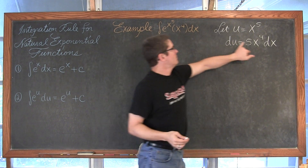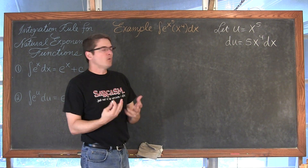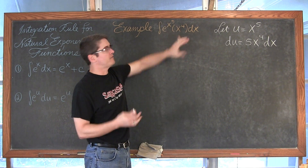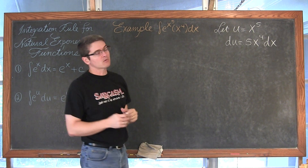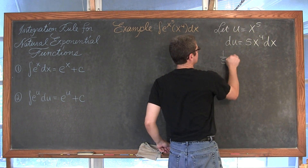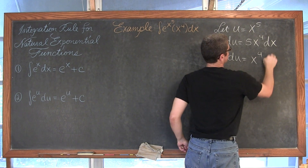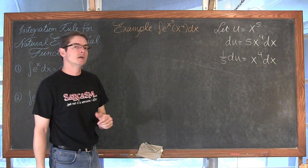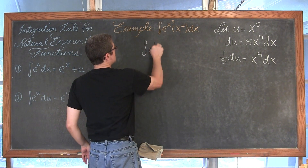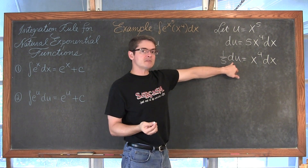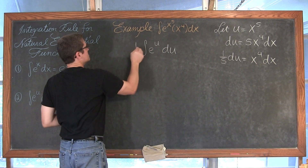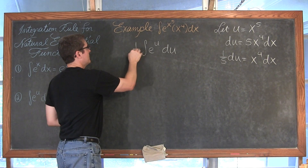We have an x to the fourth dx in our expression, and we have an x to the fourth dx in our du equation — we are really close. I am going to divide both sides by 5 and get one-fifth du is equal to x to the fourth dx. Now we have very nice substitutions to get rid of all references of x. The indefinite integral becomes e to the u, and we put the constant one-fifth out in front of the integrand.